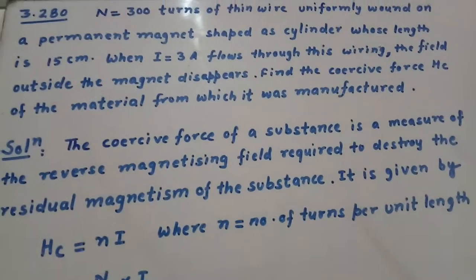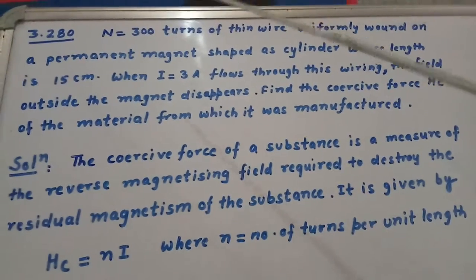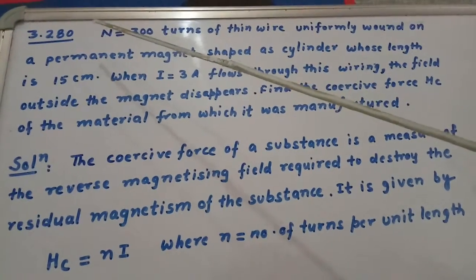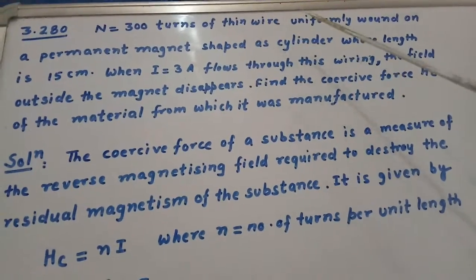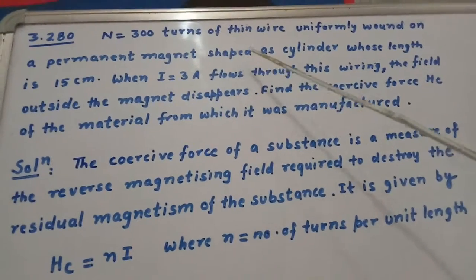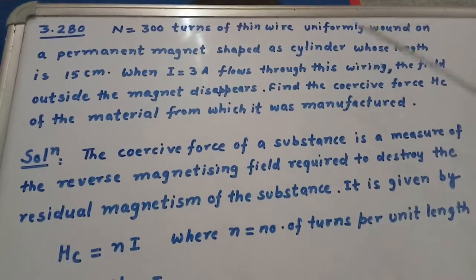Hello students, this is RK Sharma from IIT Show. Today we are going to discuss problem number 3.280 from Erodo. N equals 300 turns of thin wire uniformly wound on a permanent magnet shaped as a cylinder whose length is 15 centimeter.